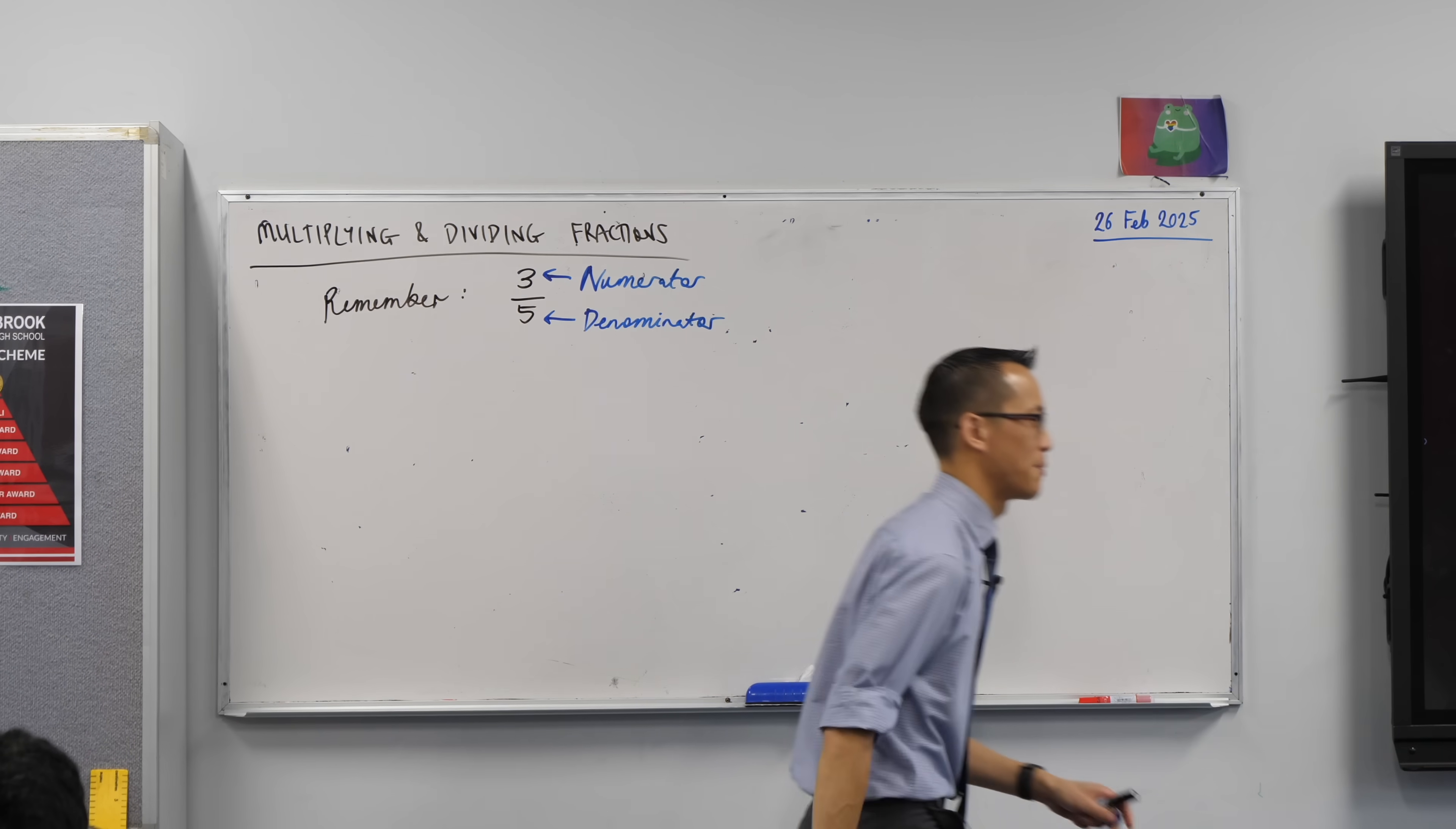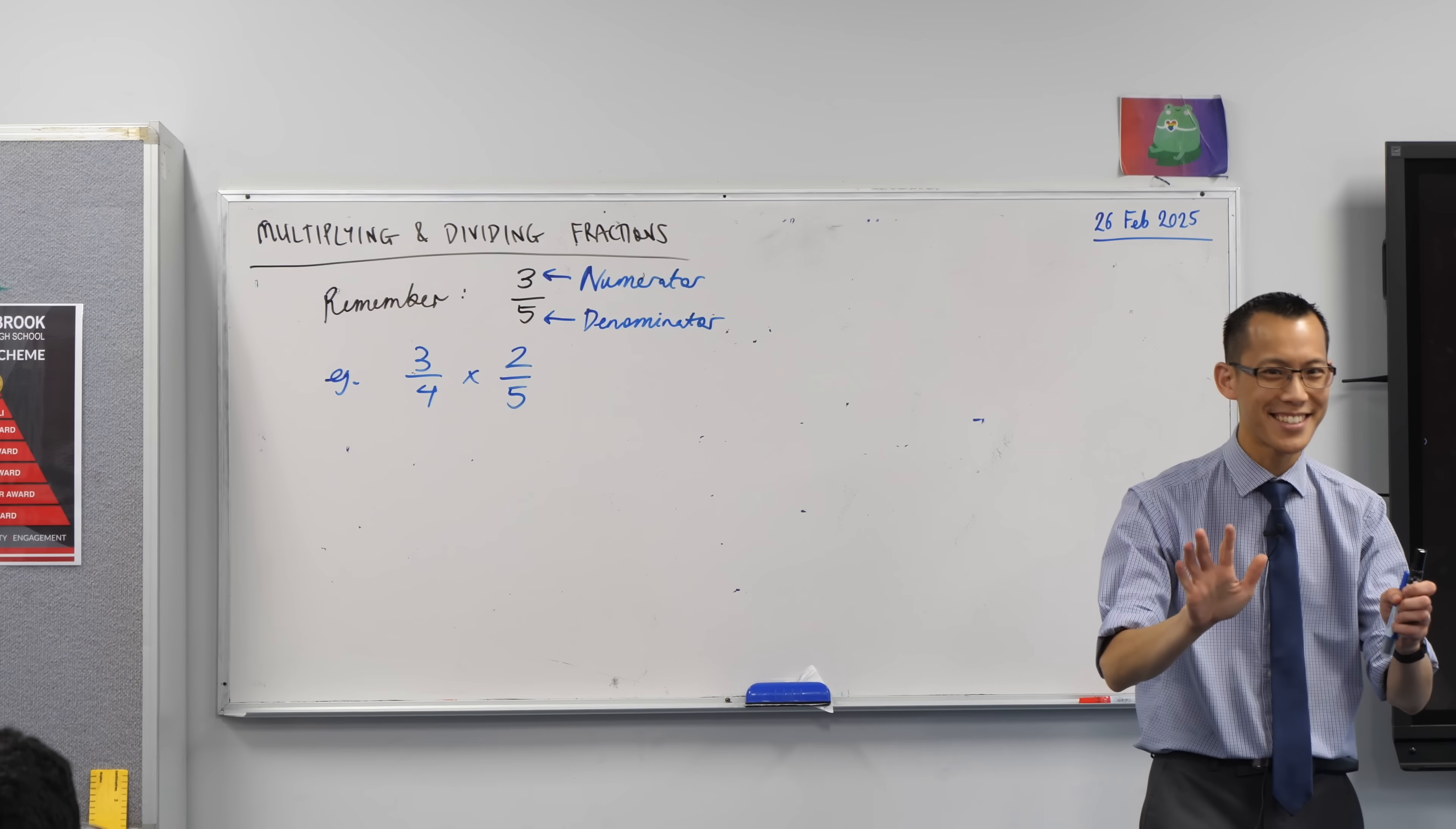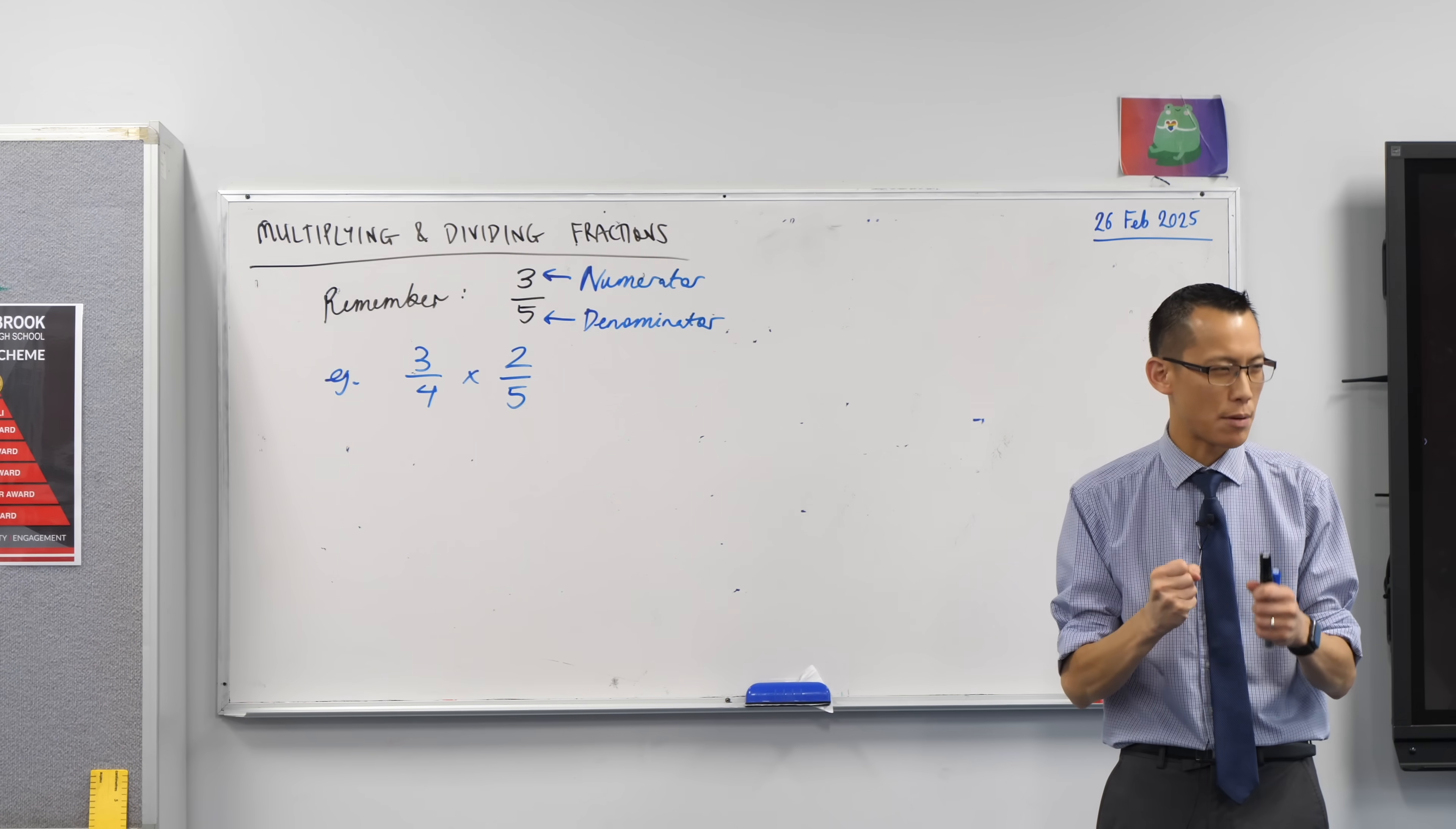So, when we think about... I actually picked some numbers out for myself. I just want to remember what they are. Let's think about three quarters multiplied by two fifths. Now, I know some of you have the answer already for me. Great. That's not what I want yet. I want some understanding because I know some of you know exactly what process to get and you get an answer. That's good, but I need some deeper thinking here. Okay?